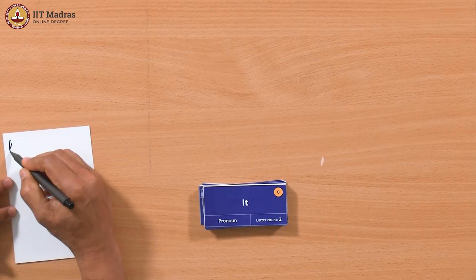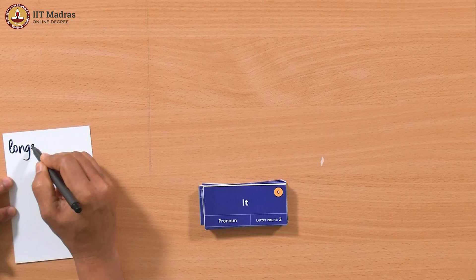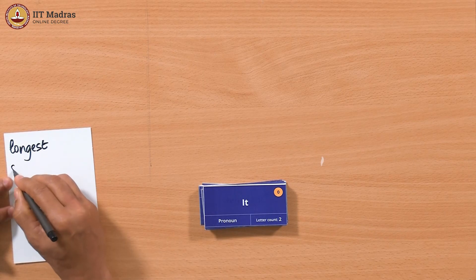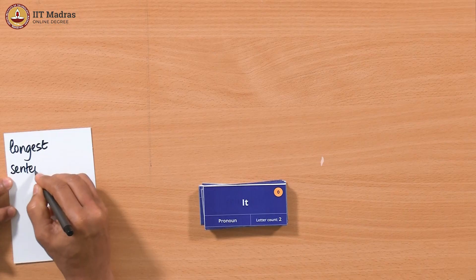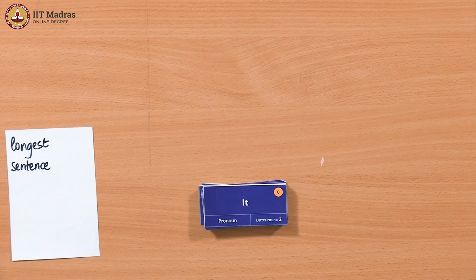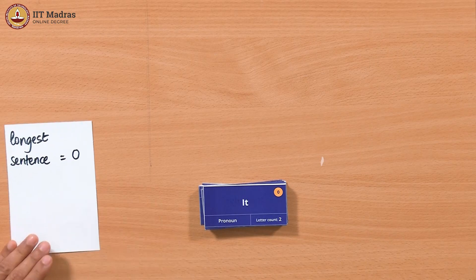Let us try that. What do we say we will do? We will start with a variable — let us call it 'longest sentence', so we remember what it is. Initially, let us set it to 0, because we know a sentence has to have at least one word, so 0 works as a starting value. And I am going to go through the words — you tell me when we have hit the end of a sentence. As we do this, we count. Do we keep count in another card? Yes, so we need another variable — let us call that 'count'. Count is keeping track of the number of words we have seen so far. We start with 0.